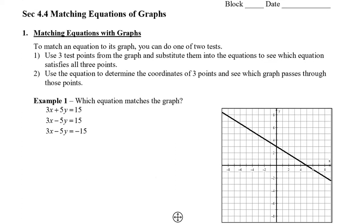So in this first example, we have three equations and we have one graph. So what we're going to do is choose three test points from the graph, and we're going to substitute them into all of the equations to see which equation actually satisfies all three points. So let's try this. From the graph, I'm going to pick points that actually cross nicely at the crosshairs. So we have one over here, and this is negative 5, positive 6. We also have the y-intercept of 0, 3. And we also have this point down here, the x-intercept, at 5, 0.